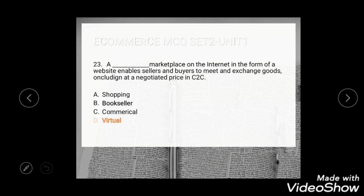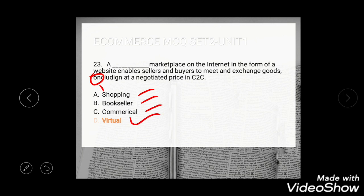Question 21 (C2B/C2C): A dash marketplace on the internet in the form of a website enables sellers and buyers to meet and exchange goods, including at negotiated prices, in C2C. Options are shopping, bookseller, commercial. The correct answer is virtual — a virtual marketplace on the internet in the form of a website.